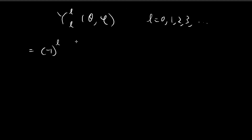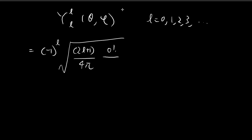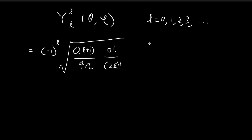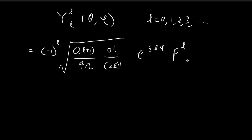Then we have the square root of (2L+1) divided by 4π. We have (L minus M) factorial — since M equals L, that's 0 factorial — divided by (L plus M) factorial, which is (2L) factorial. For the exponential term, we have e to the power of iLφ. And finally, we have the associated Legendre polynomial P_L^L(cosθ).